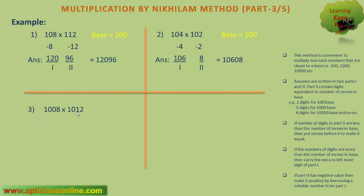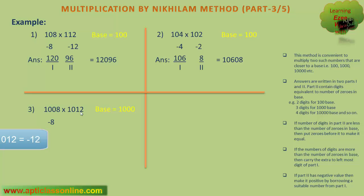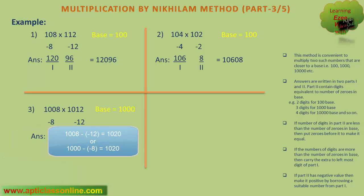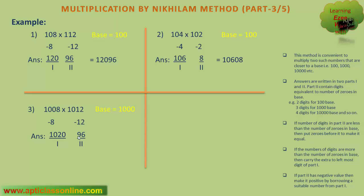Now the third example: the base for the multiplication of 1008 and 1012 is obviously 1000, because both these numbers are closer to 1000. We find the difference: 1000 minus 1008 is minus 8, and 1000 minus 1012 is minus 12. The first part is the difference of 1008 and minus 12, which is 1020. The second part is the multiplication of minus 8 and minus 12, that is, 96. But the second part must contain 3 digits, so we place a zero before 96 to make it a 3-digit number. The final answer is 1020096.